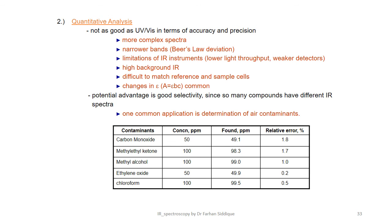Quantitative analysis is not as good as UV-visible in terms of accuracy and precision. Can be used for more complex spectra with narrow bands. Limitation of IR instrument is high background, difficult to match reference and sample cells, change in epsilon is common. Potential advantage is good selectivity since so many compounds have different infrared spectra. One common application is determination of air contaminants.